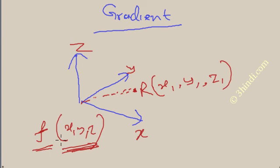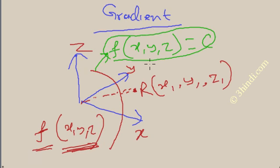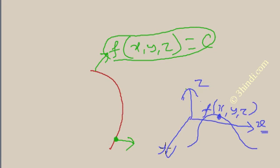Now suppose I plot a surface which has the same values of f — that is, the surface f(x, y, z) = constant. If you want to find the normal to that surface in vector form, you require to find out the gradient at that point, which gives the normal vector at that point on that surface.